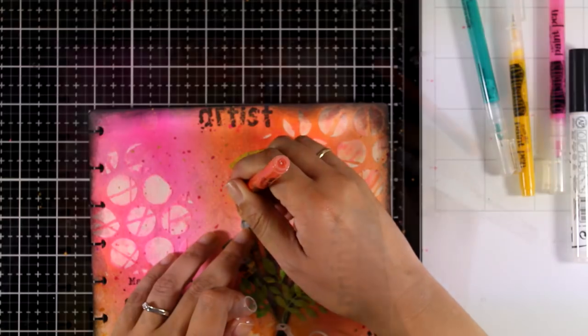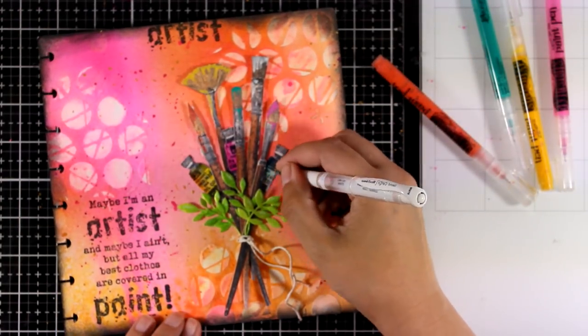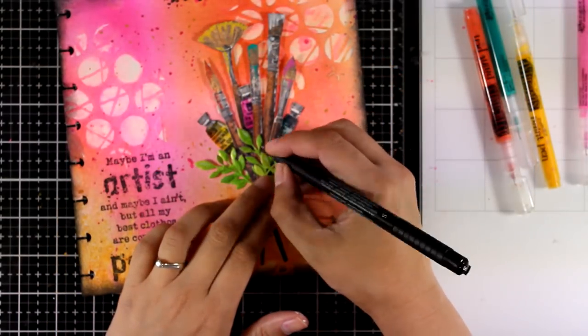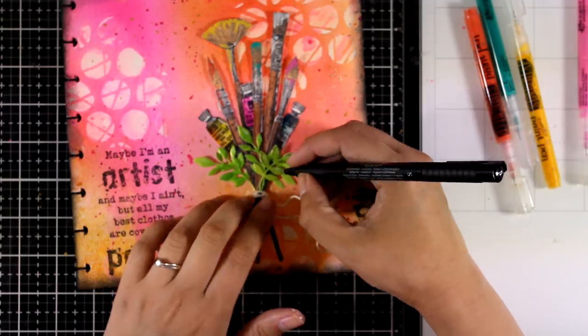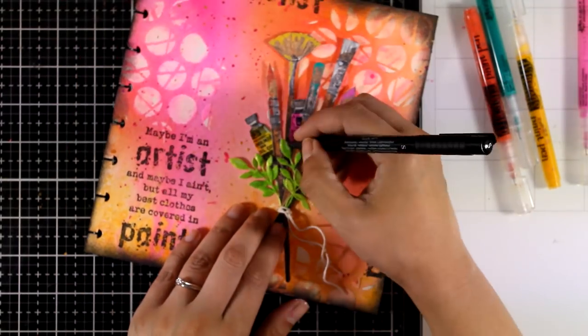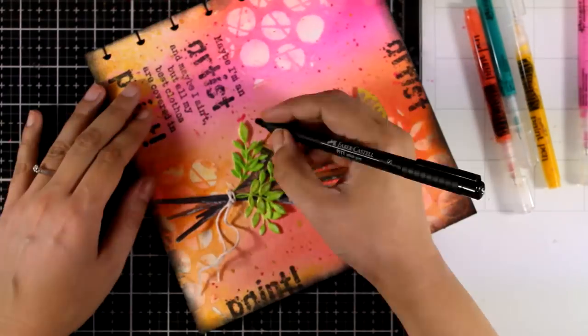Now I'm using a white marker and adding some highlights in different areas. Now I'm using a thin black marker and I'm adding some sketchy lines around the leaves just because all the rest of my images, the brushes and the paints, do have black lines around them. I want to add these details so everything matches.